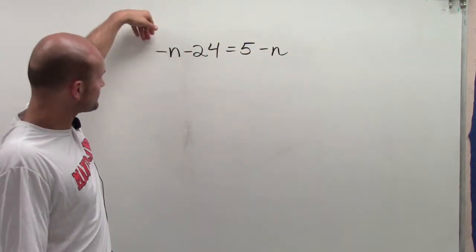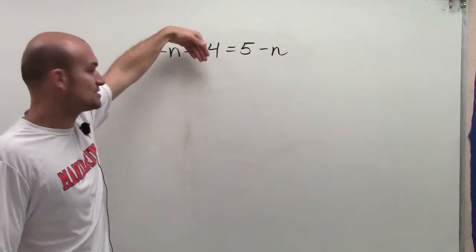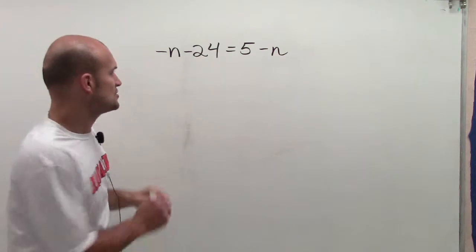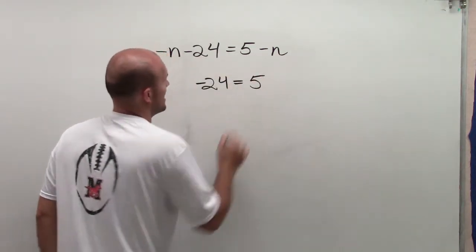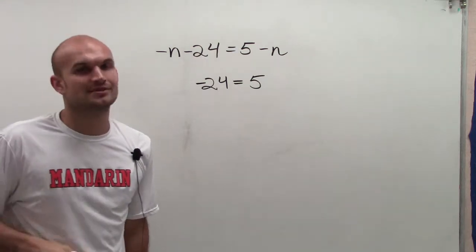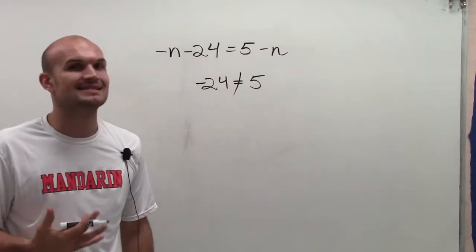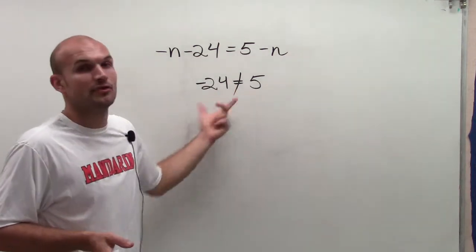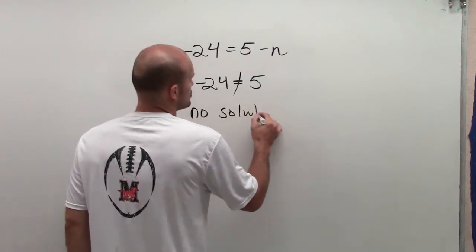So if n equals 0, I'll have negative 0 minus 24, which is just negative 24, equals 5 minus 0, which is just 5. So therefore I have negative 24 equal to 5. Well, obviously those are not equal to each other. Therefore, that is not a solution. And since I cannot create a solution and those are not equal to each other, I have no solution.